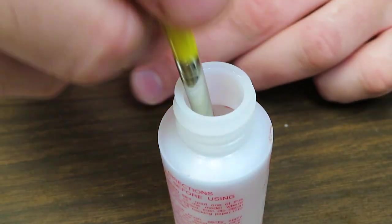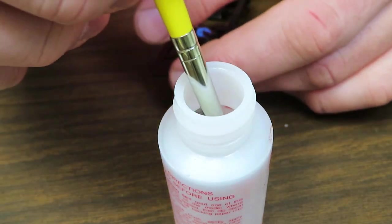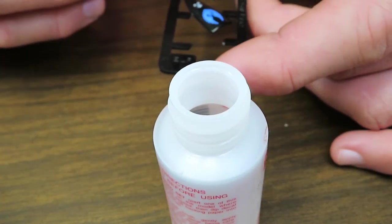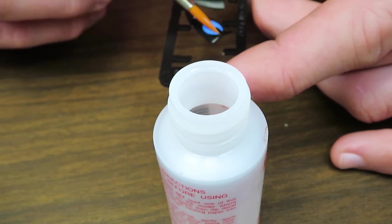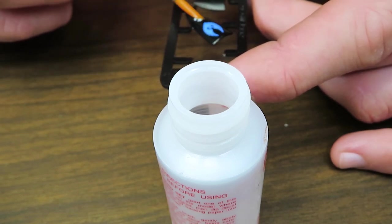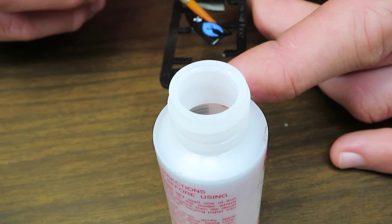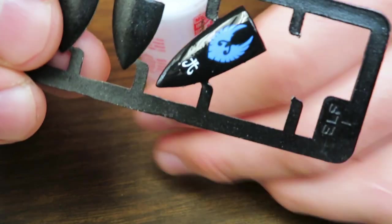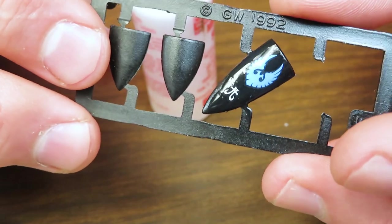So we take this. Whereas your microset smells like vinegar, this stuff smells like Windex. Is there a relation? I don't know. But we're going to just lightly go over the decal with the microsol. Let me see, I got it all over the place. Let me set it aside.